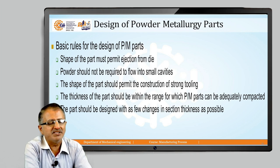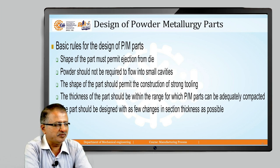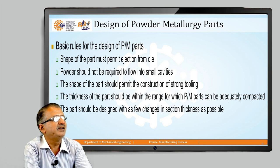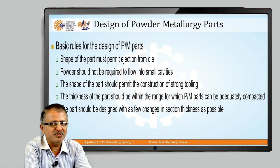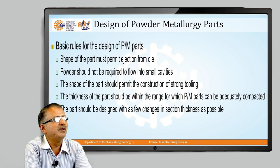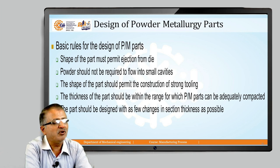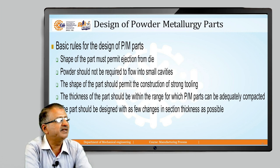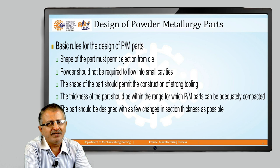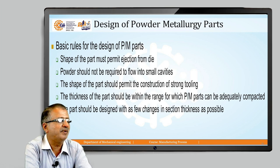The final product is available for dispatch, but some design considerations are essential when designing a powder metallurgy part. The basic rules are: the shape of the part must permit ejection from the die since net shape processing is the core objective; powder should not be required to flow into small cavities; the shape of the part should permit construction of strong tooling; and the thickness of the part should be within the process limitations.